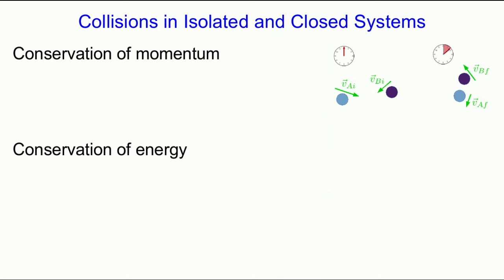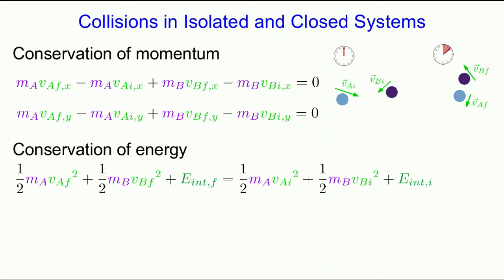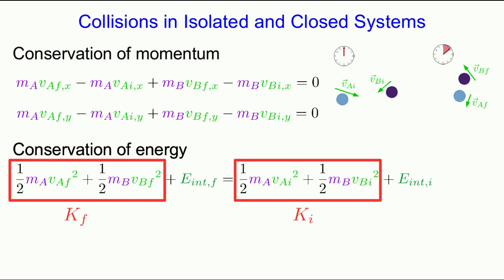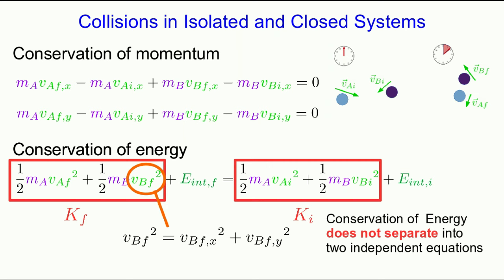Before I move on, let me just talk about this sort of situation where we have a collision in an isolated and closed system. And so momentum is conserved and the energy is conserved. Where if that looks a little big, just note those are the final and initial kinetic energy and internal energies for the system. And those V squareds in the conservation of energy would expand out in terms of the components. And so note that the conservation of energy does not separate into two independent equations because it's not a vector equation. And so there are no i hats and j hats that make it separate out.